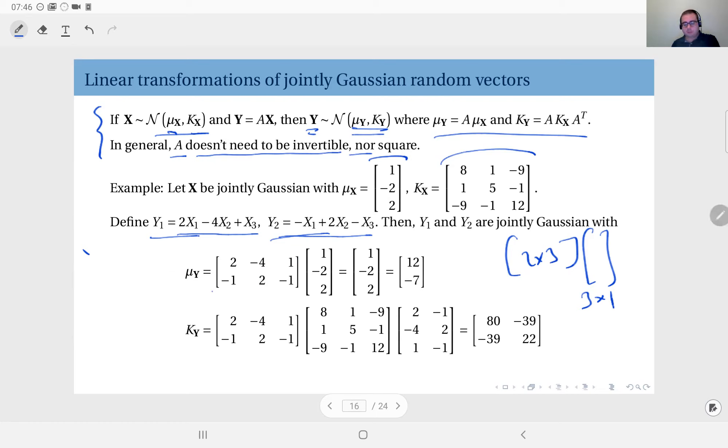To compute the mean vector, multiply matrix A with the mean vector of X, which is given to us here. This is the result: 12 and minus 7. So 12 is the mean of Y1, minus 7 is the mean of Y2.